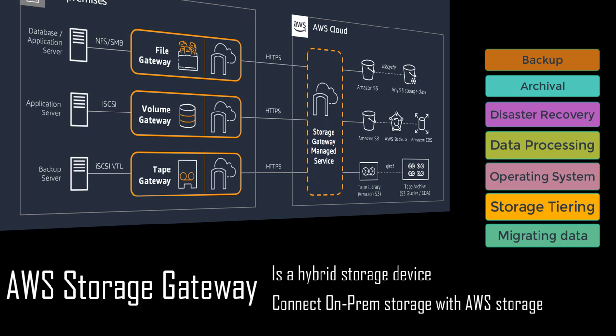The gateway connects to AWS storage services like S3, Glacier, Glacier Deep Archive, block storage EBS, and AWS Backup. These services provide storage for files, volumes, snapshots, and virtual tapes in AWS. This service features a highly optimized data transfer mechanism with bandwidth management, network resilience, and efficient data transfer.